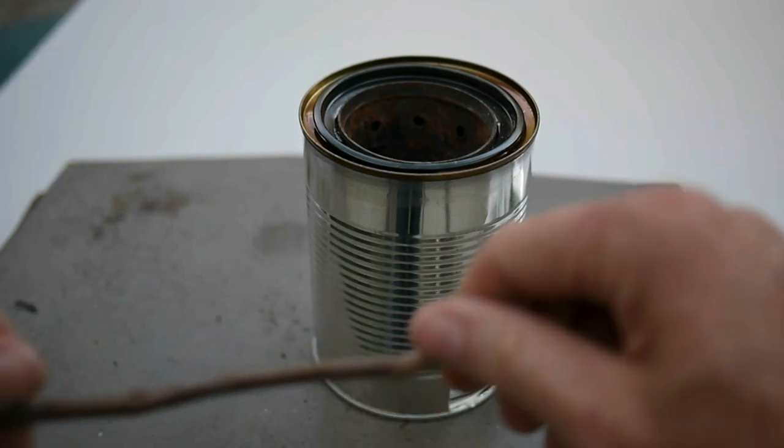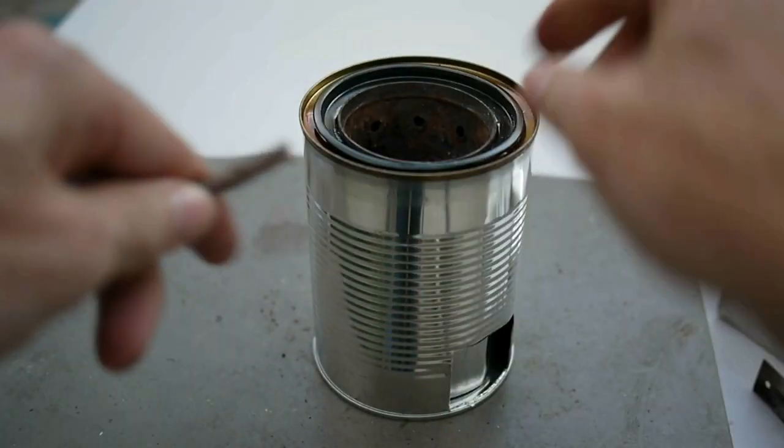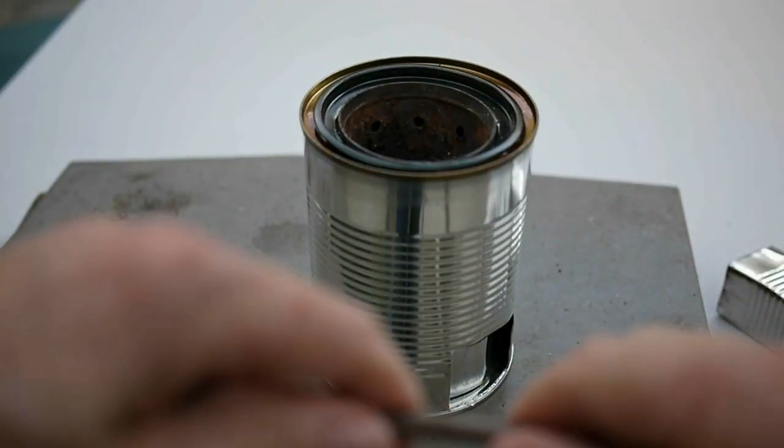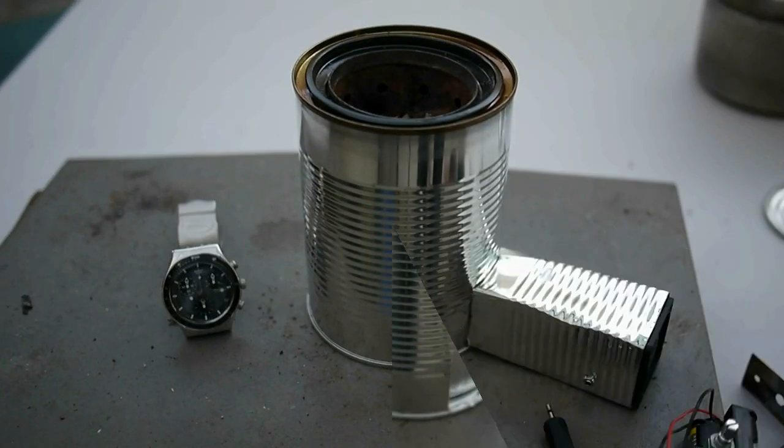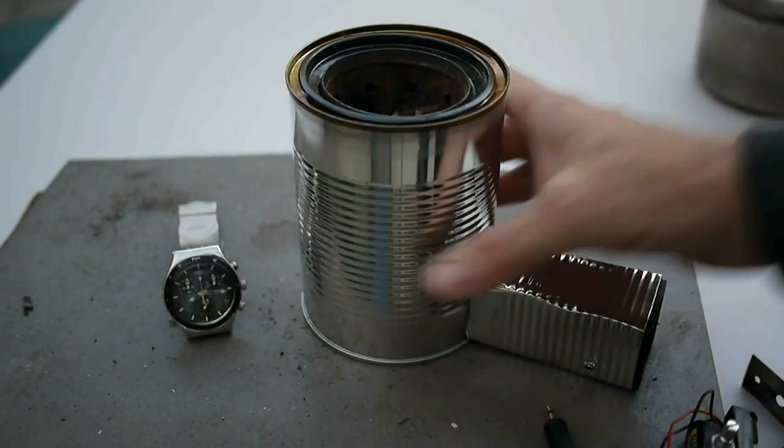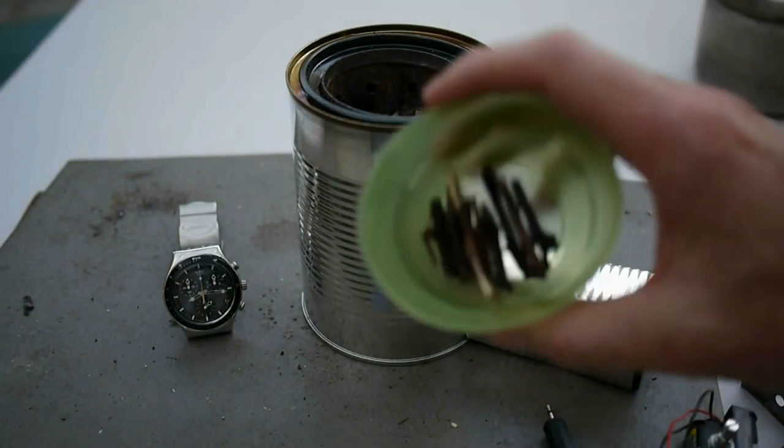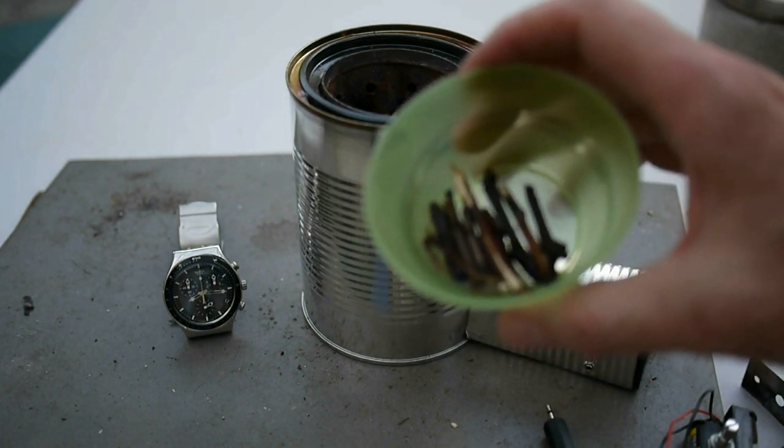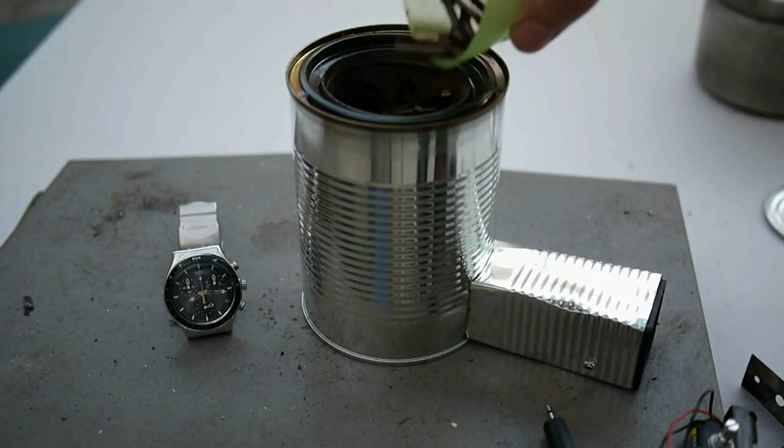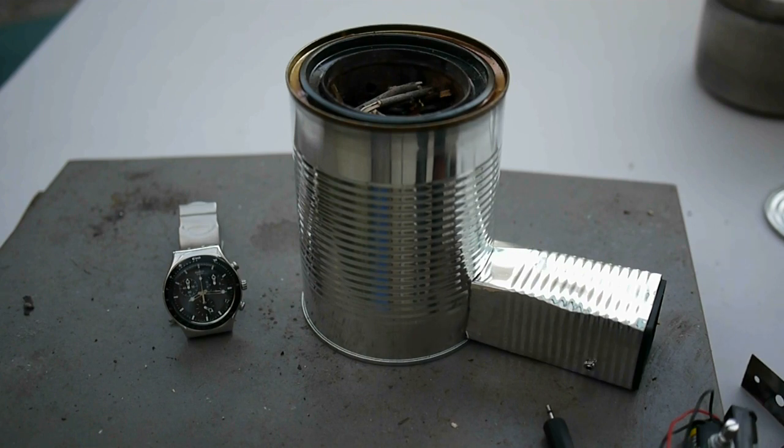So then what you do is you get some sticks, you just break off little pieces of sticks and fill it up. Okay, we're back again. So here's our container with sticks in it. Let's fill it up to just below the holes. Then for lighting it, I usually put some sticks in, a teaspoon or two of metho, and put those on top. Maybe put a few more sticks on top of that.